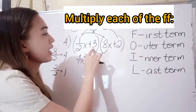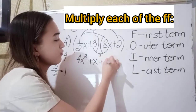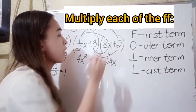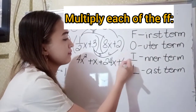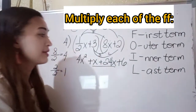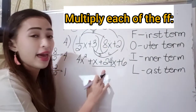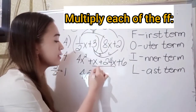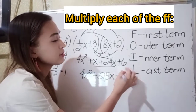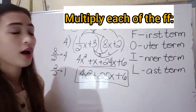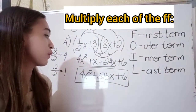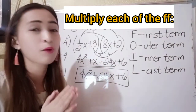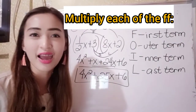The inner term is 3 times 8x, which is 24x. The last term is 3 times 2, which is positive 6. Combining similar terms: x and 24x gives us 25x. So the answer in number 4 is 4x squared plus 25x plus 6. That's how we end our lesson for today. If you have more questions, just comment down below, and don't forget to subscribe to my channel. Goodbye!